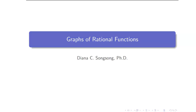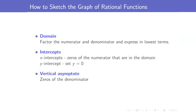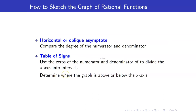In this lesson, we are going to sketch the graphs of rational functions. In our last video lecture, we talked about getting the domain, intercepts, vertical asymptote, horizontal or oblique asymptotes of rational functions. In order to sketch the graphs of rational functions, we have to do all of this. The only thing we didn't do in our last lecture was creating our table of signs. This table of signs is similar to what we had when discussing rational inequalities, and it will help us determine whether the graph is above or below the x-axis.